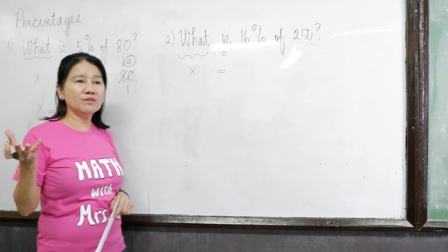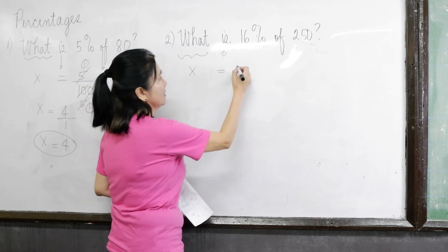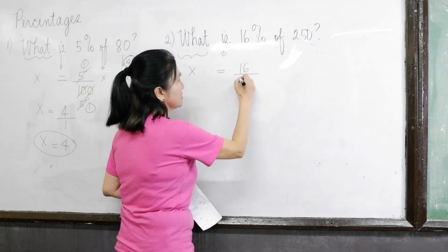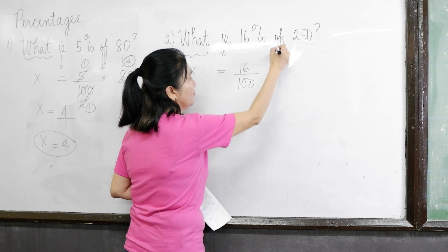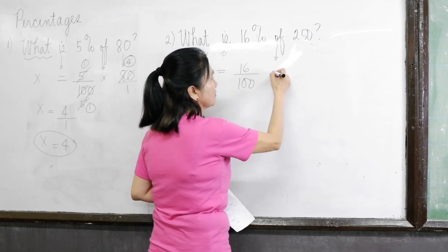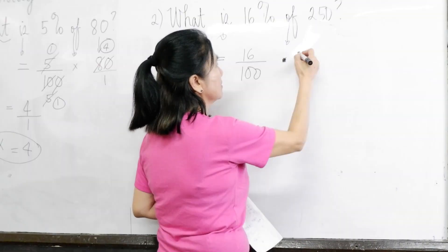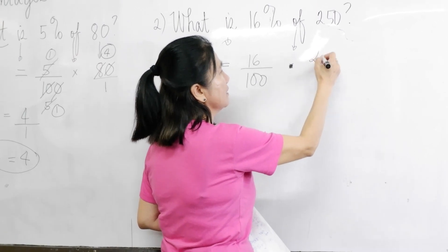What is 16% again, as we have learned? 16? 16 over 100. Okay. That's correct. Very good, Christine. 16 over 100. Of? Yes, times. Times. Or we can use a dot or X because this is already X, so we might as well use dot.